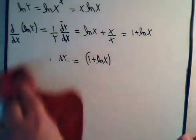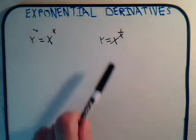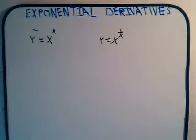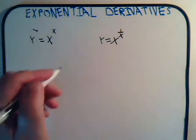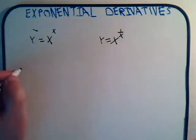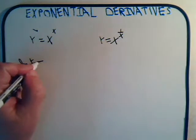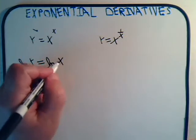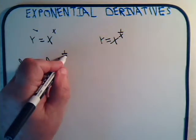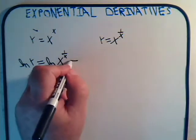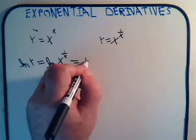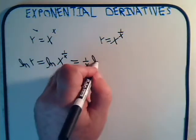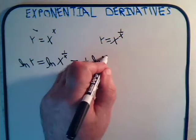Let's see how we can apply it to the second problem. We want to look at y equals x to the 1 over x power. Take the log of both sides: the natural log of y equals the natural log of x to the 1 over x, which equals 1 over x times the natural log of x, using our property of logarithms.